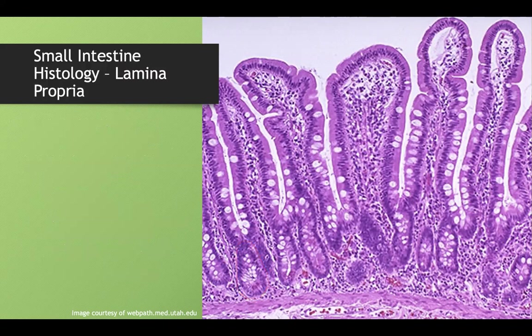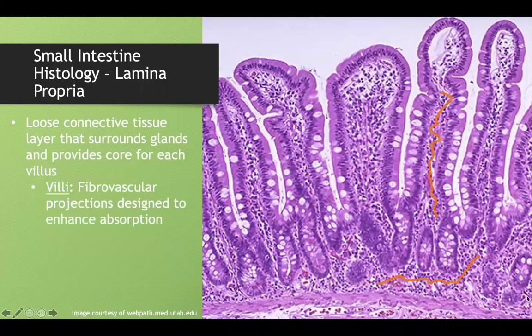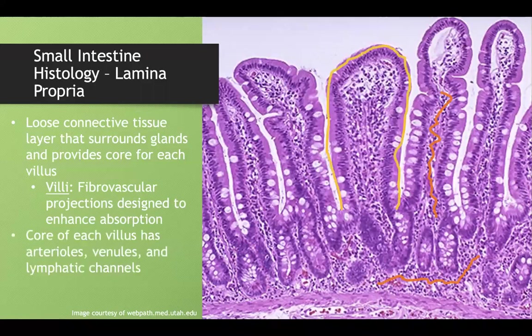The lamina propria provides a connective tissue core for each villus, encompassing everything between the surface epithelium and the muscularis mucosa. Importantly, it contains an arteriole, venule, and lymphatic channel running through it to provide blood flow to the surface epithelium.